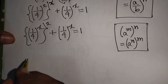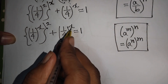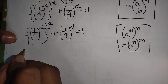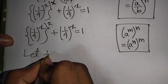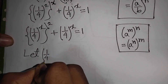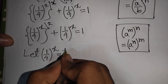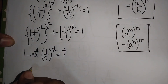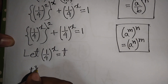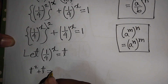We see that (1/4)^x appears in both terms, so let (1/4)^x be substituted by t. Our equation then becomes t squared plus t is equal to 1.